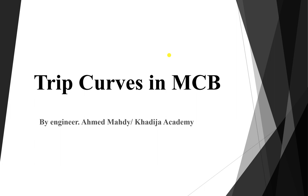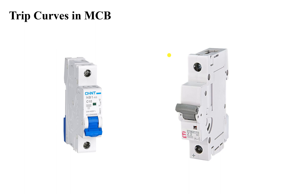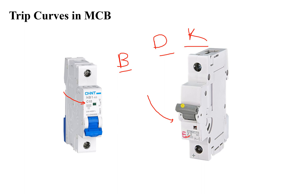Hi and welcome to this lesson. We will talk about trip curves inside circuit breakers, or more specifically the miniature circuit breaker. If you look at any miniature circuit breaker you will find something interesting — labels like C10, Z2, or letters P, D, K and so on. What do these letters mean inside the miniature circuit breaker? This is what we are going to discuss in this lesson.